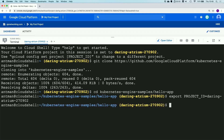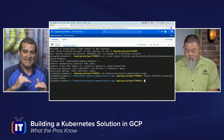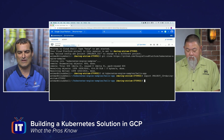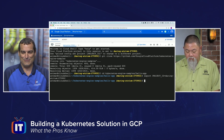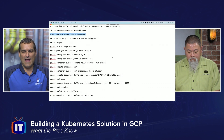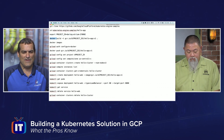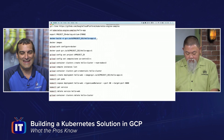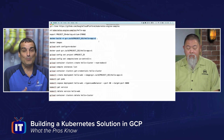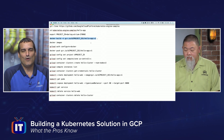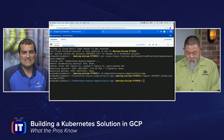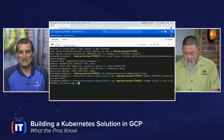What's happening here is we are setting an environment variable. So we are saying that in our scripts, if we ever use project ID, go ahead and insert our Google project ID, which you can see is highlighted in yellow — it's daring-atrium-270902. So now that we've educated the shell as to that environment variable, Ronnie's going to use his Docker command and create a Docker build of our Hello World application, named hello-app, with a version number of version one.